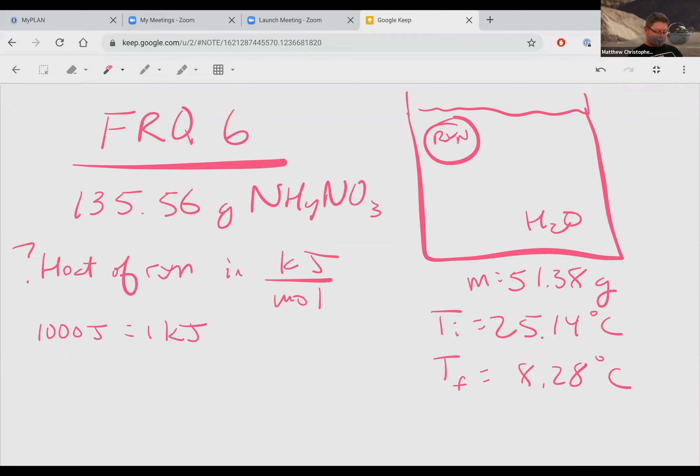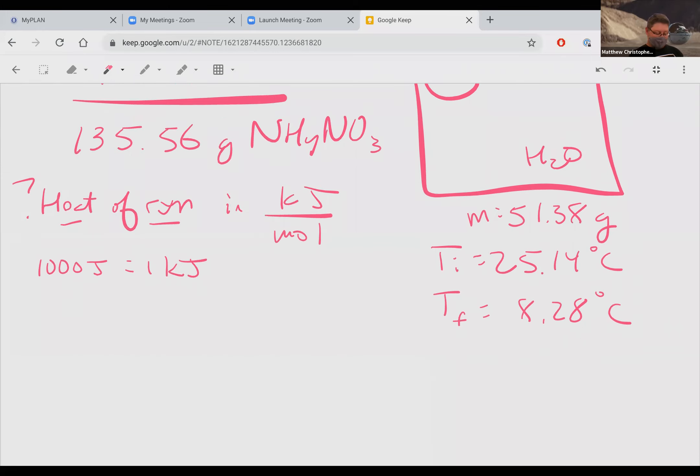In this reaction here, we want to find the heat of reaction in kilojoules per mole. The first thing you may notice is you have the mass of water, the initial temperature of water, the final temperature of water. So that means that we can calculate the Q from the water's point of view, which is MC delta T.